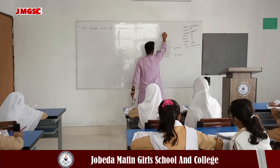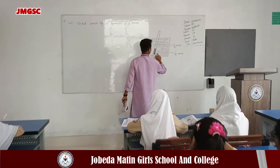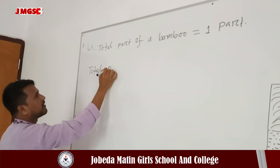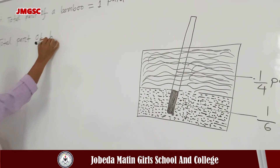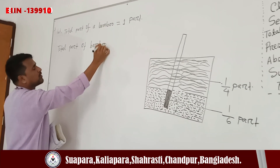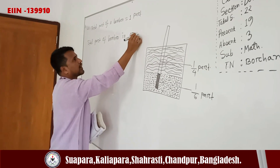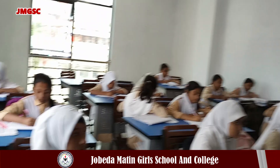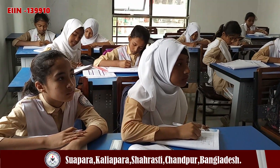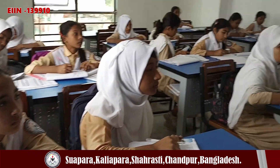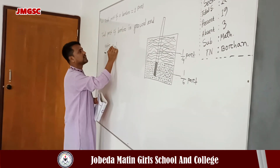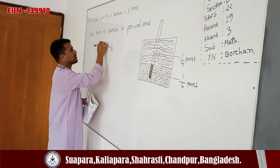This is like a bamboo. Okay? 1 by 6 part in ground and 1 by 4 part in water. There is a total part of bamboo in ground and water. Water means 1 by 4 plus 1 by 6 part. 1 by 6 plus 1 by 4.